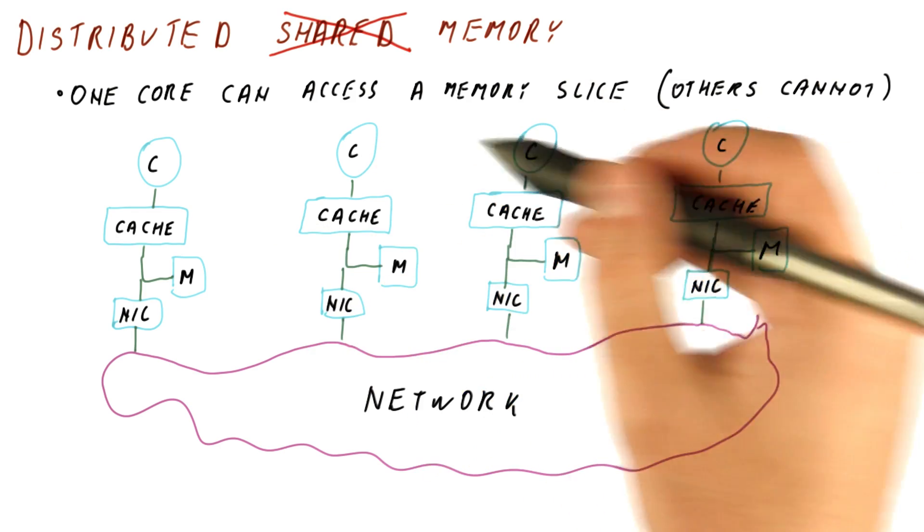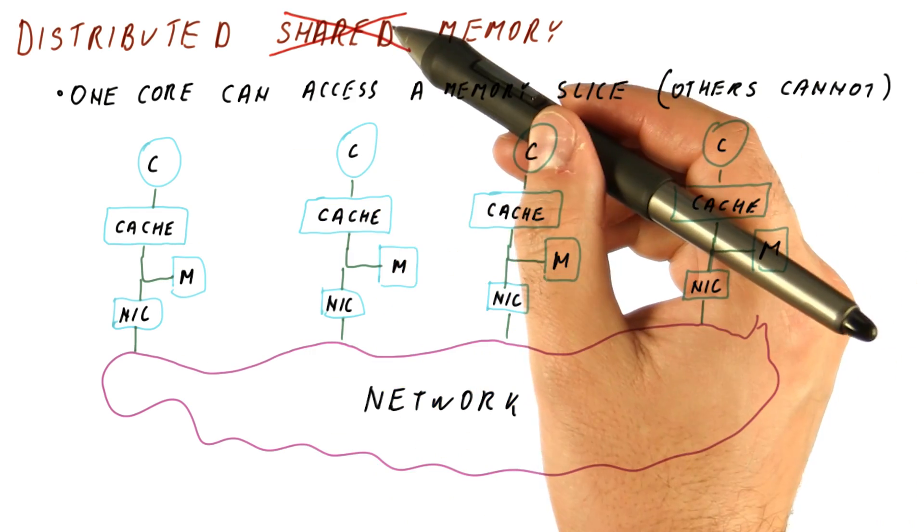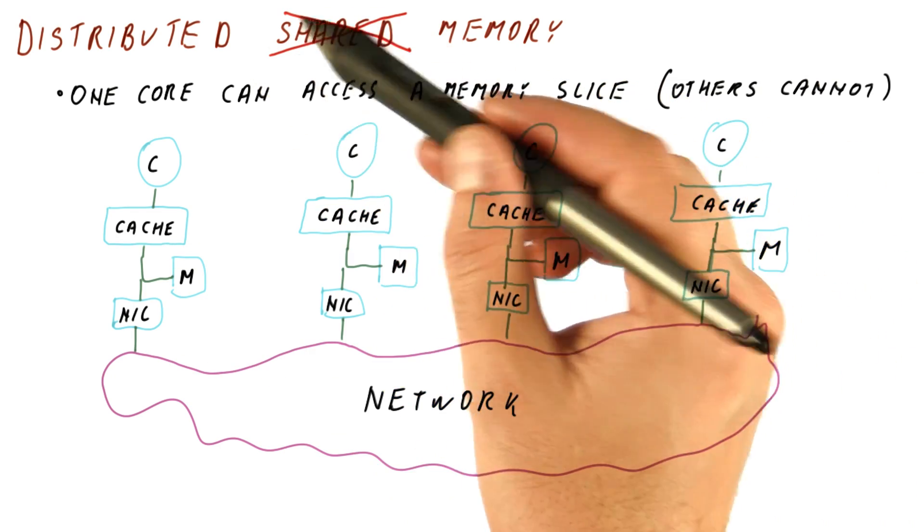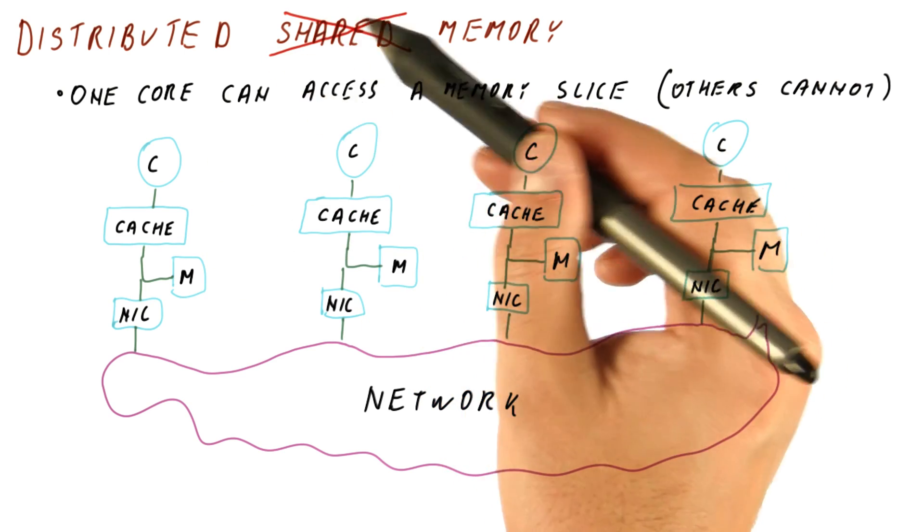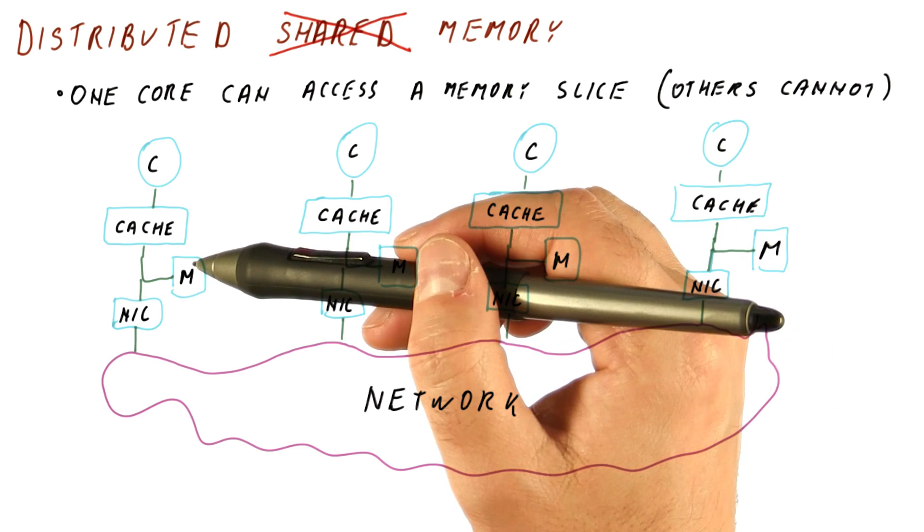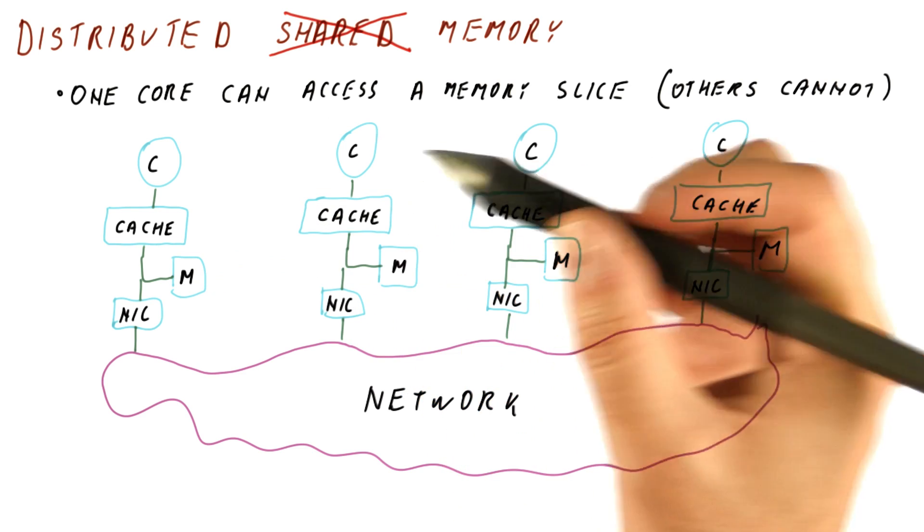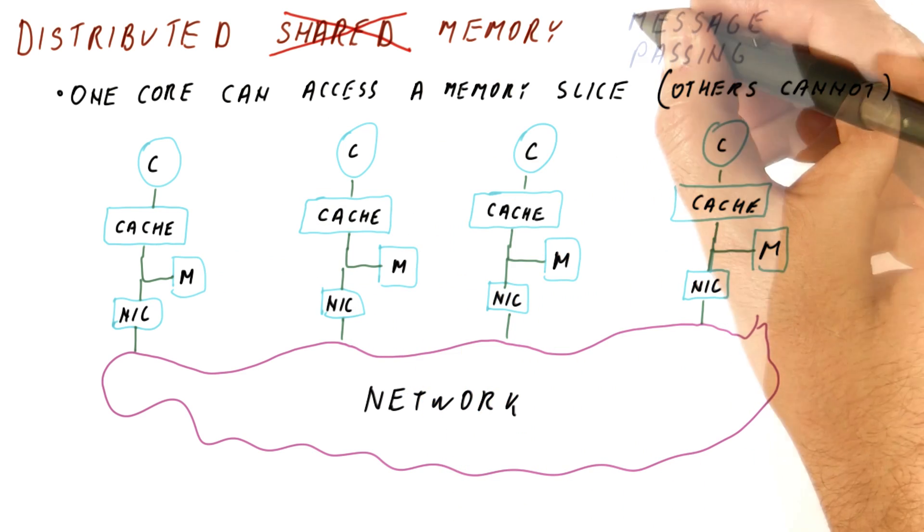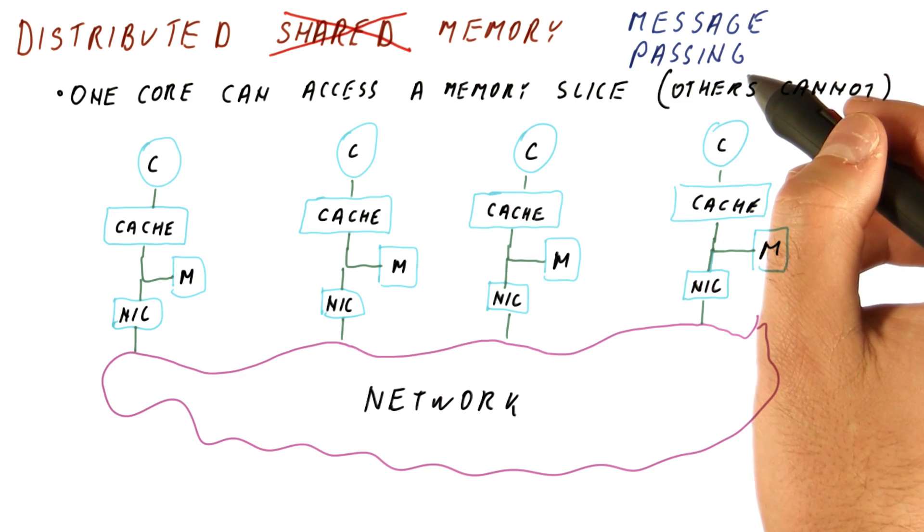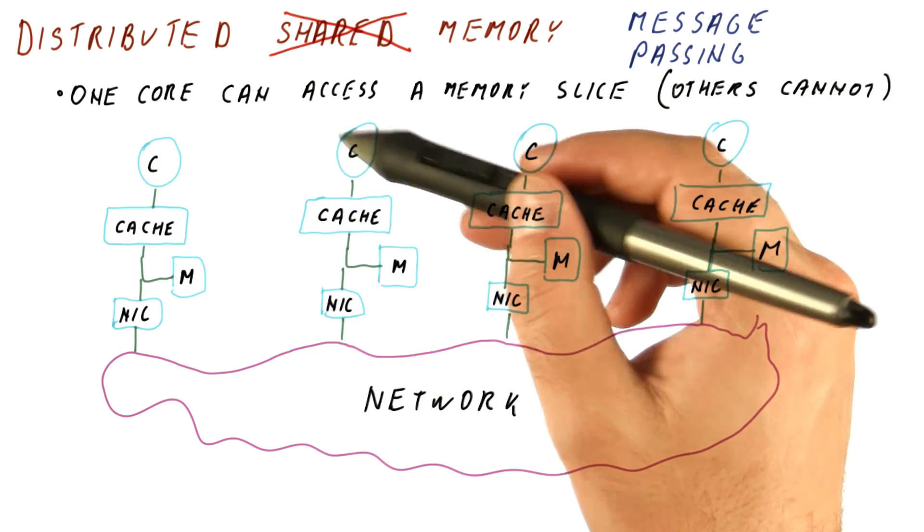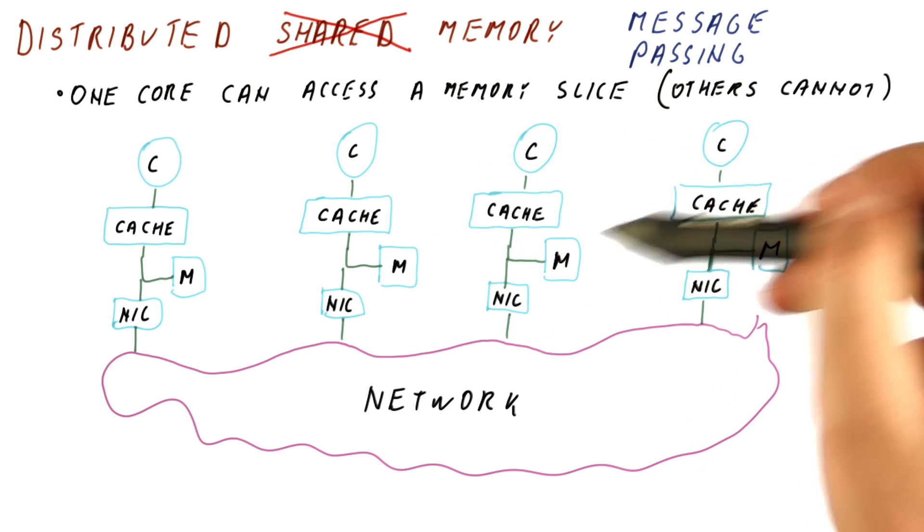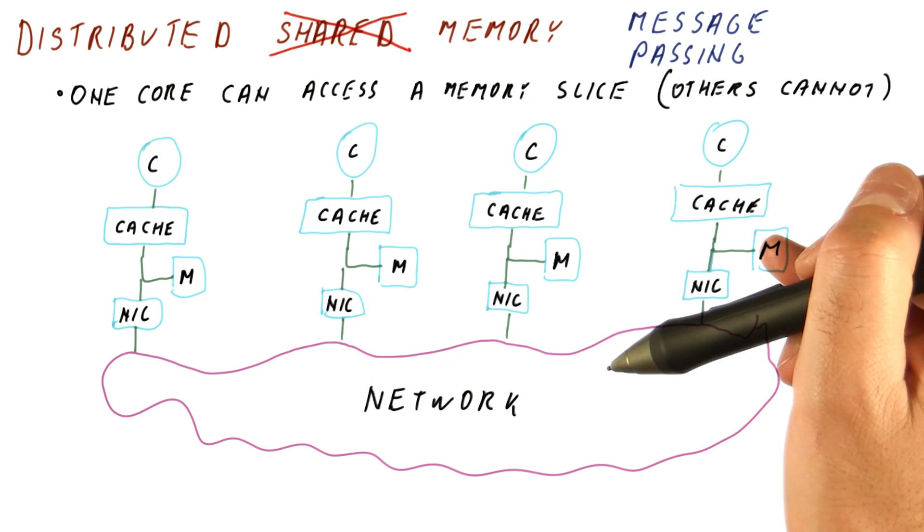So that means that you write programs differently from this. Symmetric shared memory and distributed shared memory pass data around using shared memory, meaning reads and writes to memory are used to exchange data. Now we are using what is called message passing for communication. So now you're pretty much writing a program as if these were independent machines that communicate over a network.